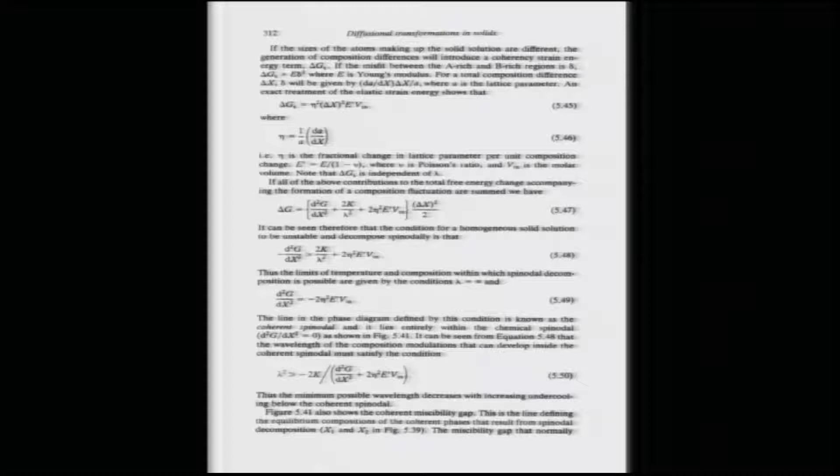The equation defining the Cohen spinodal is d²G/dX² = -2η²E'·V_m, where V_m is the molar volume, E' = E/(1-ν), and η = (1/a)(da/dX). This line is called the Cohen spinodal because it accounts only for the coherency strain with the available chemical free energy at λ = infinity, so there is no gradient energy term.